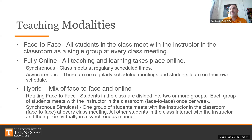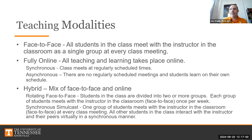Synchronous online is where the class meets at a scheduled time with direct instructor presence. Asynchronous means there are no regularly scheduled meetings and students learn on their own schedule. Hybrid is defined as rotating face-to-face, where students are divided into two or more groups and each group meets with the instructor in the classroom once per week. Synchronous simulcast — which I call HyFlex — is where one group meets in the classroom at every class meeting and all other students interact online.